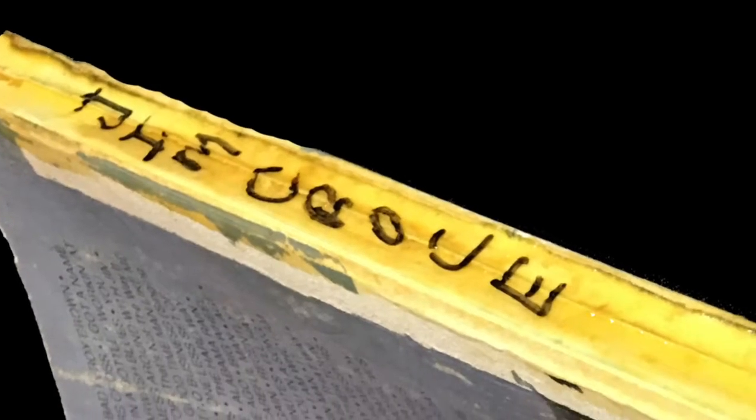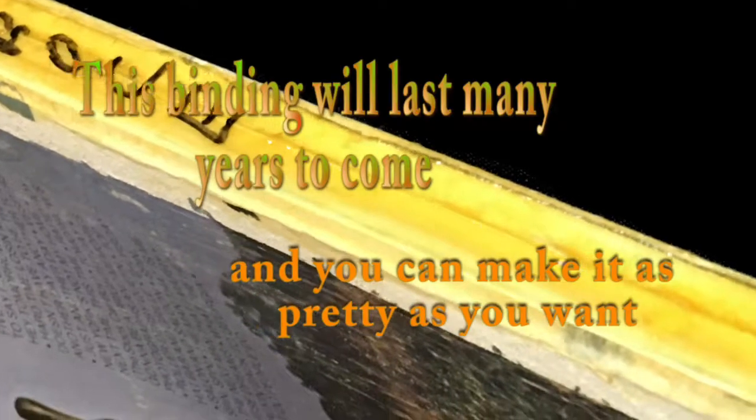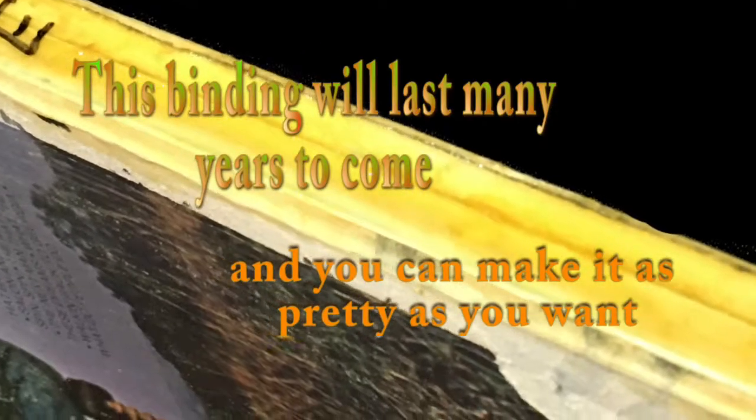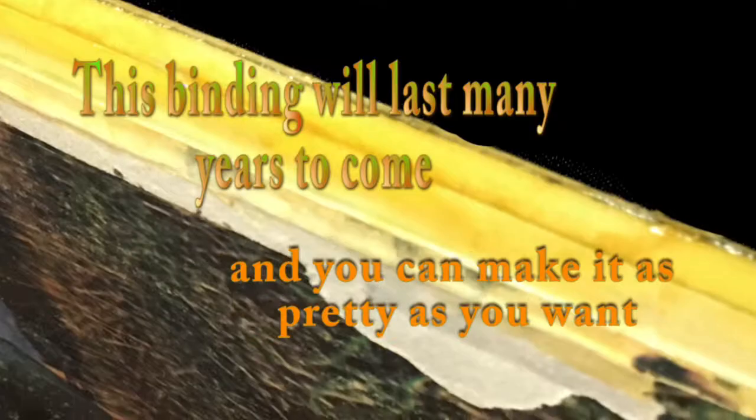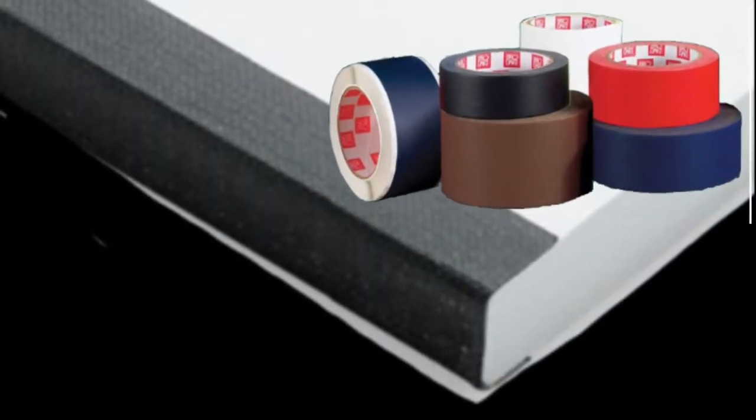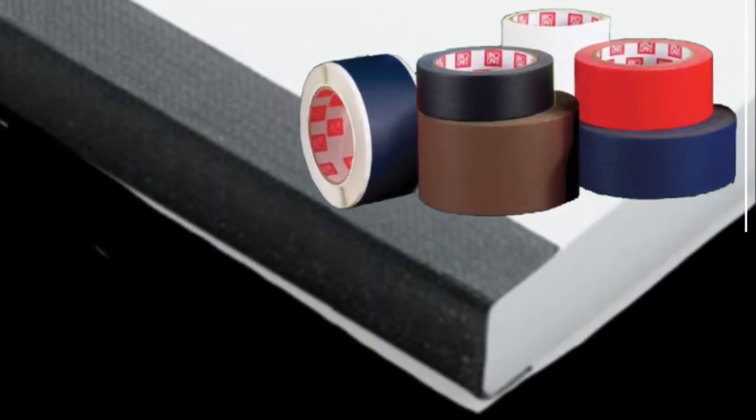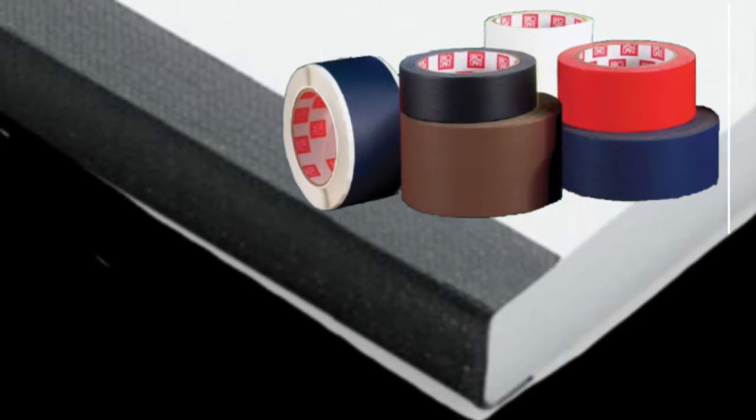This is going to be the finished product. You're going to have the glue on the base, and all the pages are bound together real well. And this binding has lasted me several years when I've done this. You can make it really pretty if you get the book tape, and that'll doctor it up quite a bit if that's really important to you.